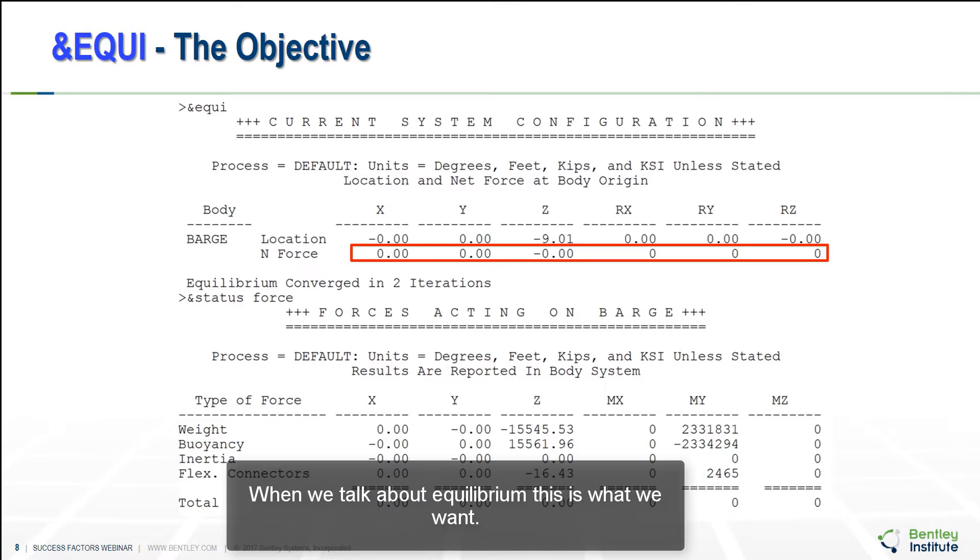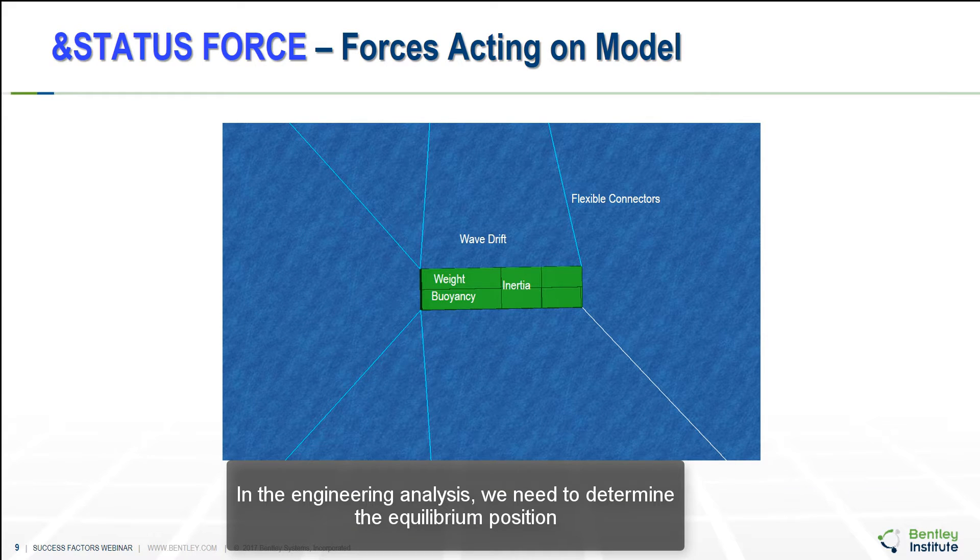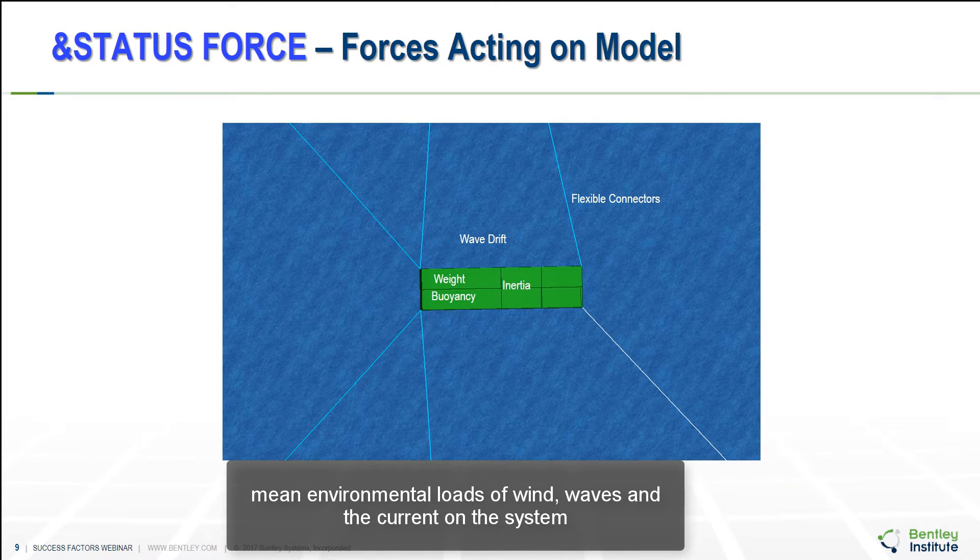When we talk about equilibrium, this is what we want. We want the line and force to have all zeros. In the engineering analysis, we need to determine the equilibrium position of the body system under the influence of external forces. We need to define the equilibrium between the mean environmental loads of winds, waves and current on the system.